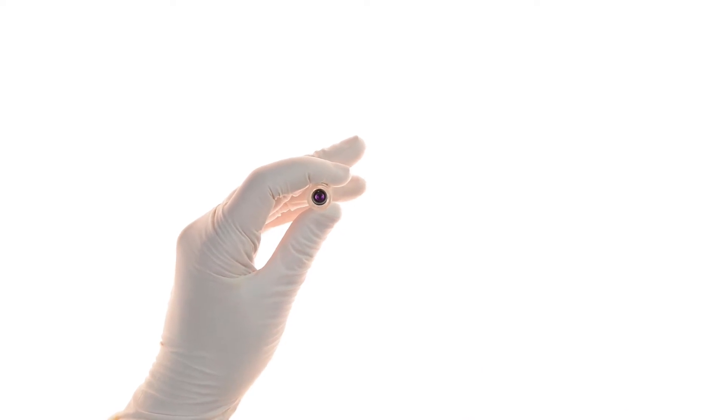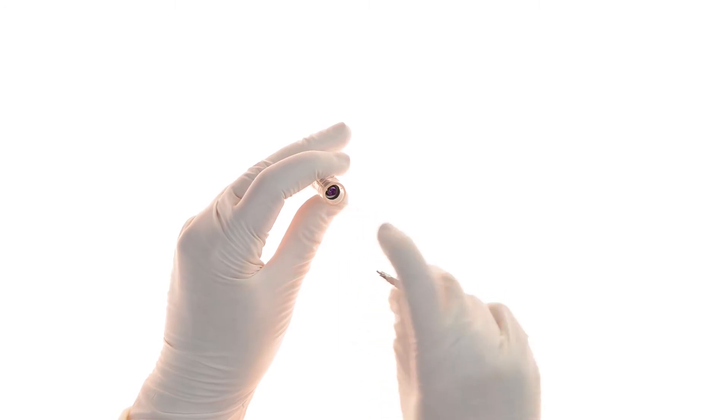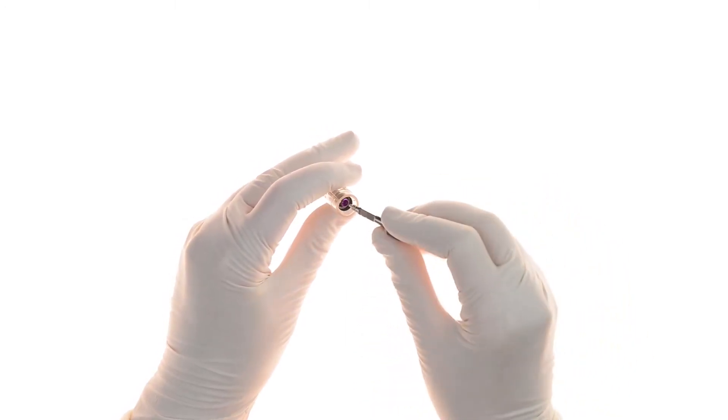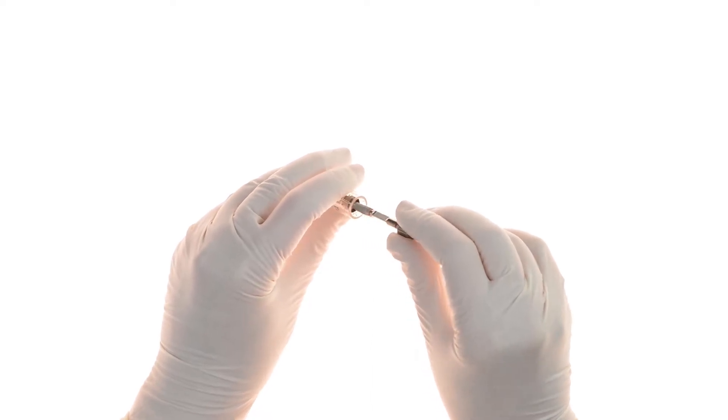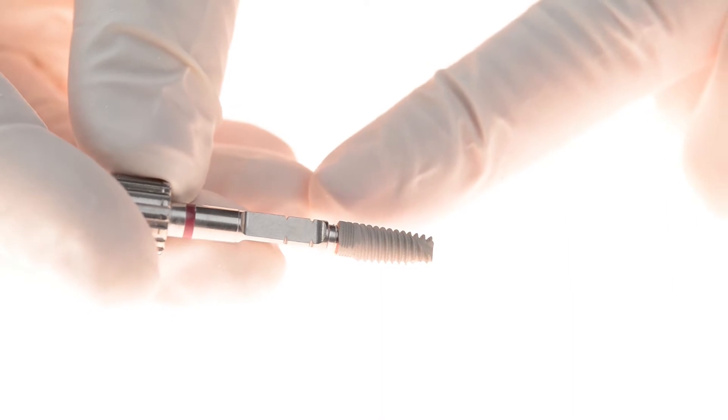The V3 is easily removed from the internal packaging using an insertion tool. Thanks to the anti-rotation mechanism of the packaging sleeve, the flat walls of the tools correspond to those of the implant and make this step of the process more convenient.